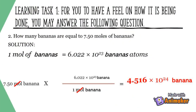Number 2: how many are equal to 7.50 moles of mongosids? Remember, 1 mole of mongosids is equal to 6.022 × 10²³ mongosids. Answer: 4.516 × 10²⁴ mongosids.